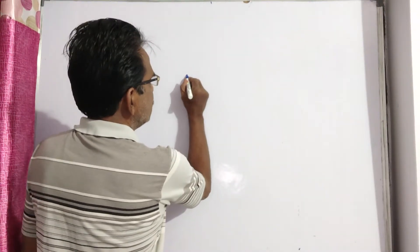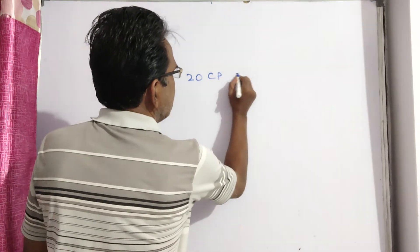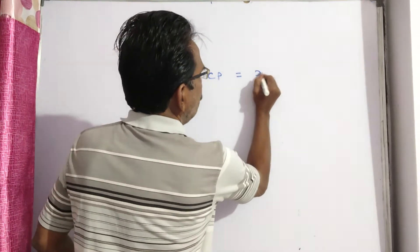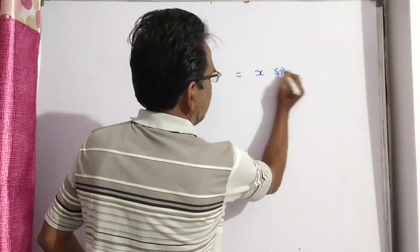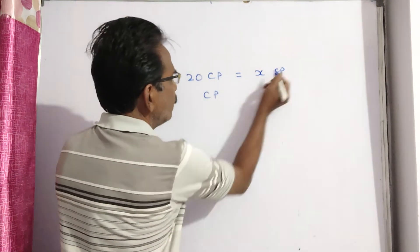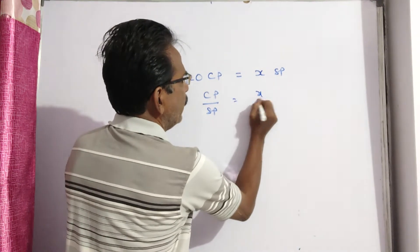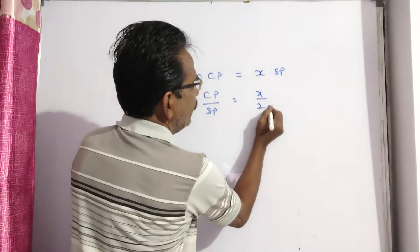See, cost price of 20 articles, that is 20CP, is equal to selling price of X articles. Now, CP by SP is equal to X by 20.